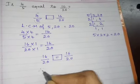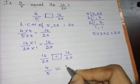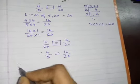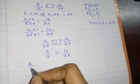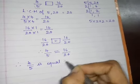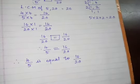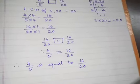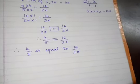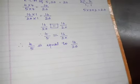So both are 16 by 20 — they are the same. Therefore 4 by 5 is equal to 16 by 20. If the fractions are not equal you should write no, it is not equal; if they are equal, write that they are equal.